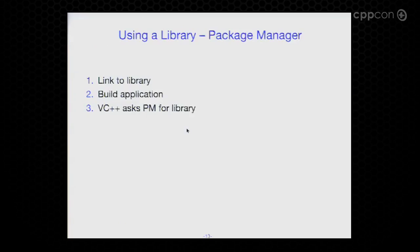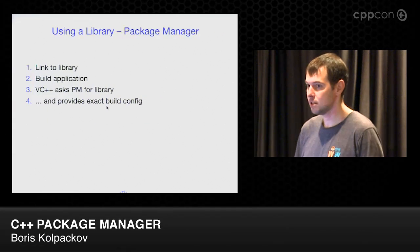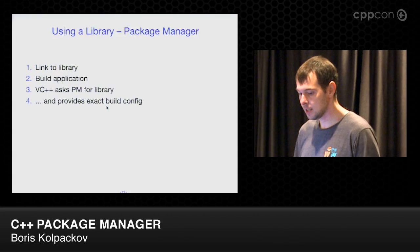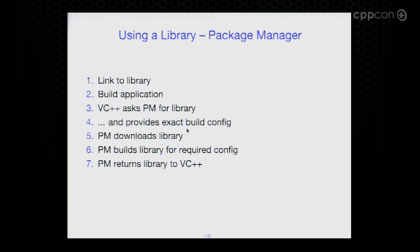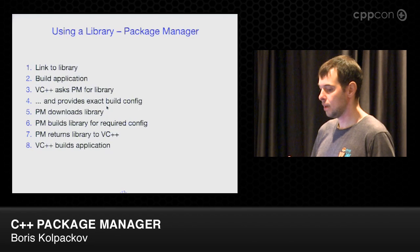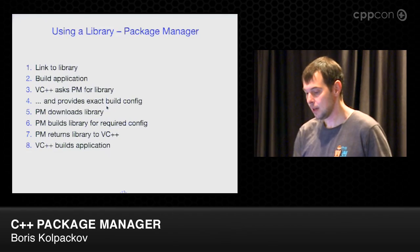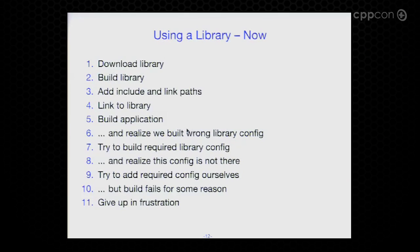Let's look at what happens underneath. Visual Studio asks the package manager for the library and provides the exact build configuration: which compiler is being used, whether it's 32 or 64-bit, ARM, debug or release, runtime — the exact information. The package manager then downloads the library if it hasn't been downloaded already, builds the library if it hasn't been built for this exact configuration, and then returns the library to Visual Studio, which just links it to the application. And everything works fine.